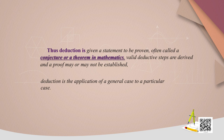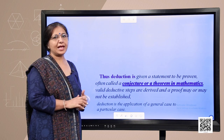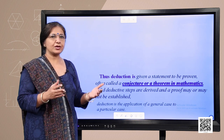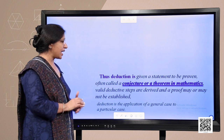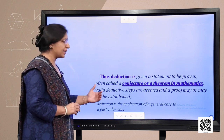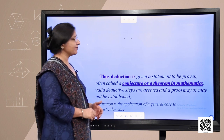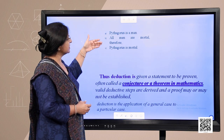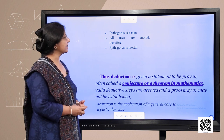Deduction is where a given statement to be proven, often called a conjecture or theorem, has valid deductive steps derived from it, and a proof may or may not be established. Like we did in many theorems in earlier classes — we do it by method of contradiction. So deduction is the application of a general case to a particular or specific case. For example, Pythagoras is a man, all men are mortal, so we can conclude that Pythagoras is mortal.